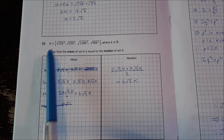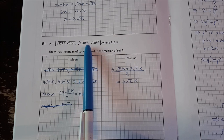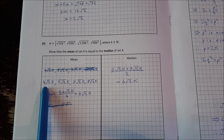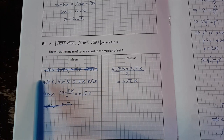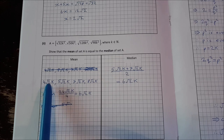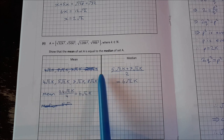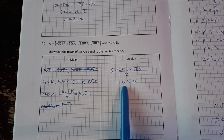Part 2: Set A = {√(32k²), √(50k²), √(128k²), √(98k²)}. Simplifying each: 4k√2, 5k√2, 8k√2, 7k√2. The mean is all four added and divided by 4, giving 6k√2. For the median, order the values and average the middle two, also giving 6k√2. So mean equals median.